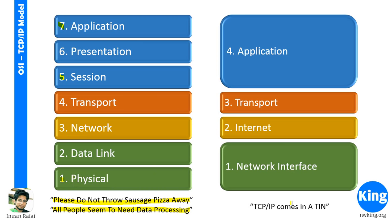If you want to remember the TCP/IP model, you could use the mnemonic: TCP/IP comes in a TIN — that is Application, Transport, Internet, and Network Interface. If you have a better way of remembering, please use it. As long as you remember the sequence of these layers, it should be perfectly fine.